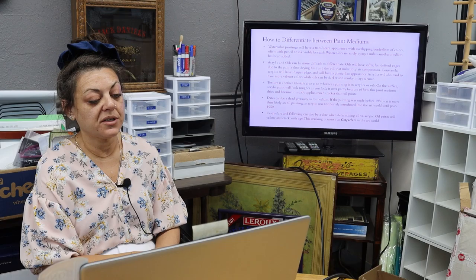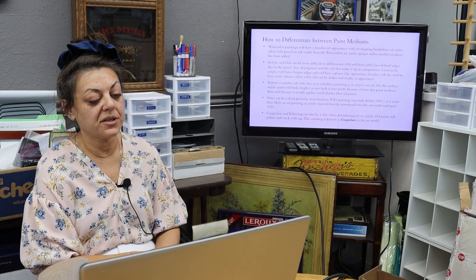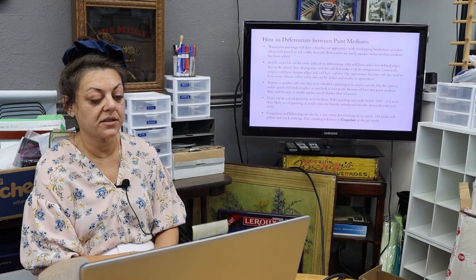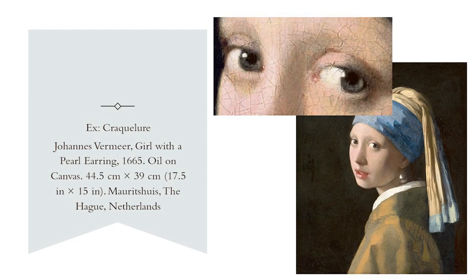Texture is another telltale clue — acrylic paint will look rougher on the surface, partially because of how the paint medium dries and because it usually applies much thicker than oil paints. Craquelure and yellowing can also be a clue when determining oil versus acrylic. Oil paints will yellow and crack with age; this crackling is called craquelure in the art world. Here's an example: Johannes Vermeer's Girl with a Pearl Earring from 1665.